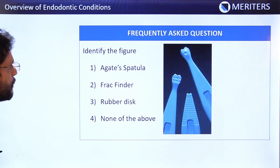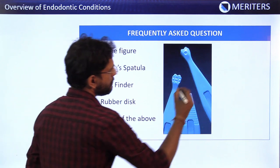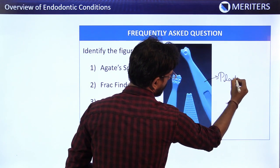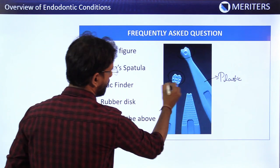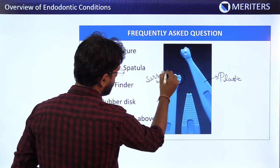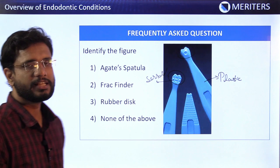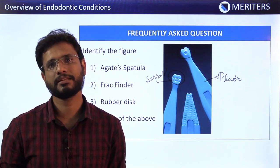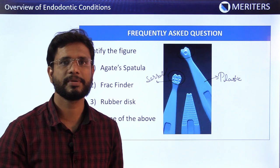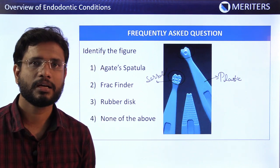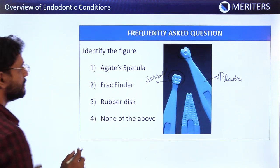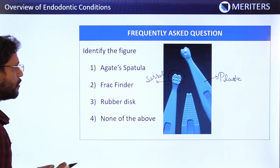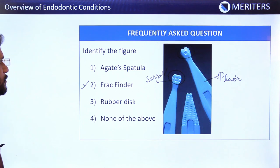MCQ: Identify the figure shown. The device shown is made of plastic with a serrated head. This serrated head is inserted into the occlusion; when the patient bites and then relieves the bite, pain occurs, diagnosing cracked tooth syndrome. This device is the FragFinder, used for checking cracked tooth syndrome. Answer: FragFinder.